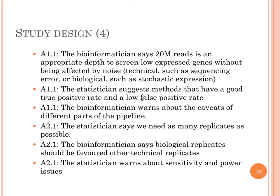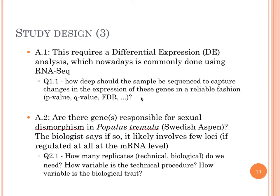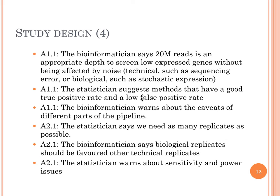Going back to the discussion between the different parties involved, we had the question: we need to do a differential expression analysis, but how deep should we sequence the sample? The bioinformatician says we commonly use 20 million reads, and this is an appropriate depth to screen for low-expressed genes without being affected by noise, giving us a good signal-to-noise ratio. The noise could be technical, such as sequencing errors, or biological, such as stochastic expression. Furthermore, the statistician suggests methods that have a good true positive rate and a low false positive rate, so that the results we get are trustworthy.